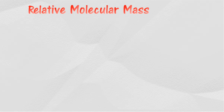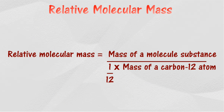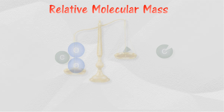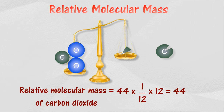Relative molecular mass can also be determined through comparison with the carbon-12 atom. Relative molecular mass of a substance is the number of times the molecule is greater than 1/12 of the mass of a carbon-12. For example, if a carbon dioxide molecule is 44 times greater than 1/12 of the carbon-12 atom, thus the relative molecular mass of carbon dioxide will be 44.